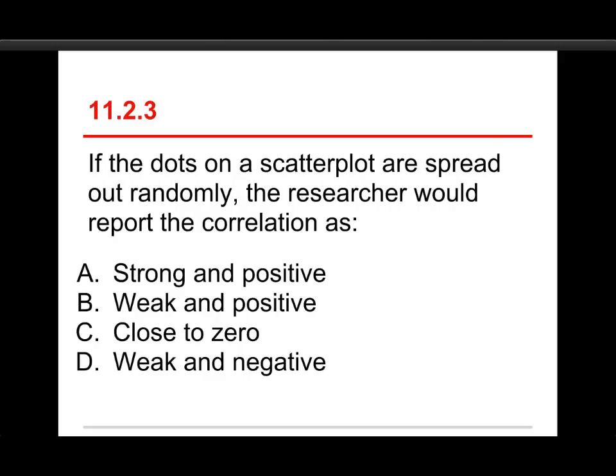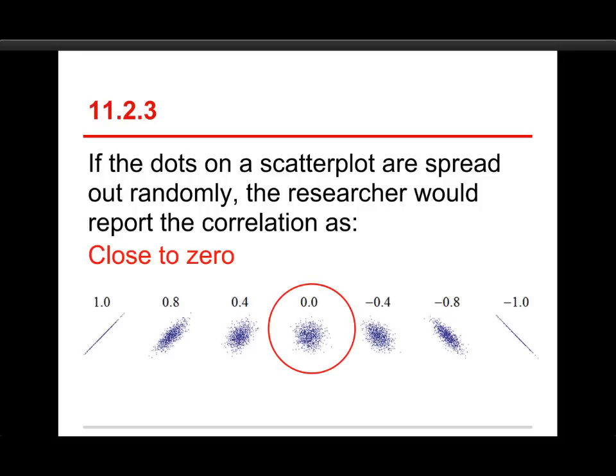Number three, if the dots on a scatterplot are spread out randomly, the researcher would report the correlation as: A, strong and positive, B, weak and positive, C, close to zero, or D, weak and negative. The answer is if they're spread out randomly, is C, close to zero. And again, let's take another look at this one. This is where we have scatterplots that go from positive one to negative one, and you see the one right there in the middle is just a blob, and that is a zero. There are other ways to get zero. There's some very peculiar patterns that still lead to zero because we're looking for a linear relationship between variables. But if you've got a blob, you've got a correlation of zero.